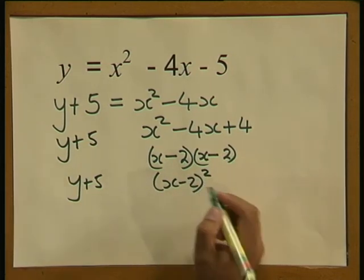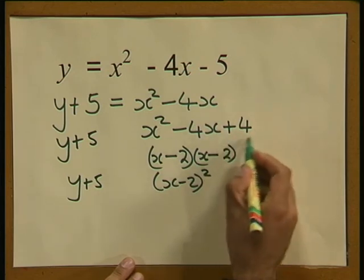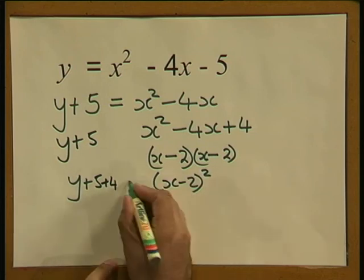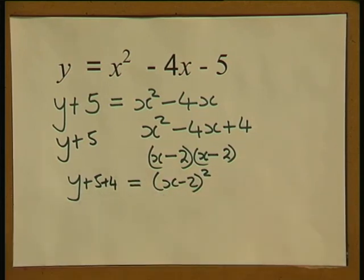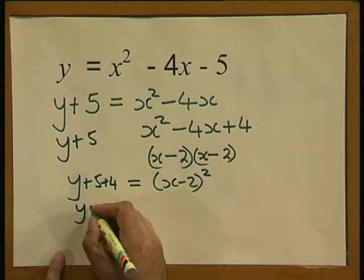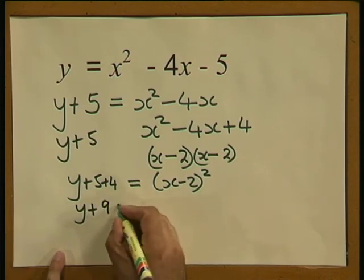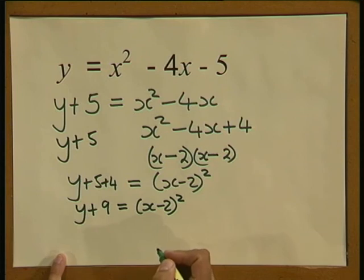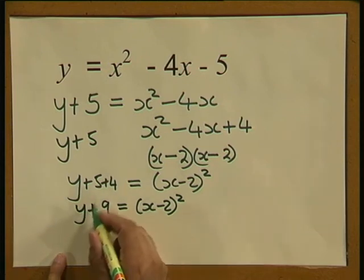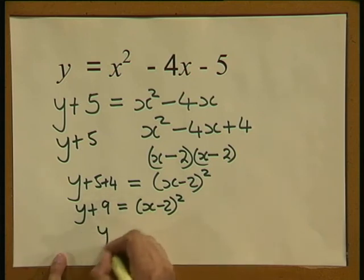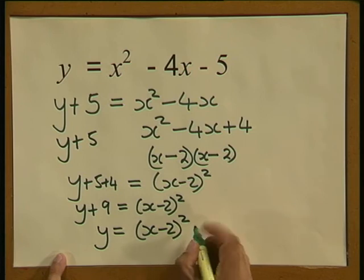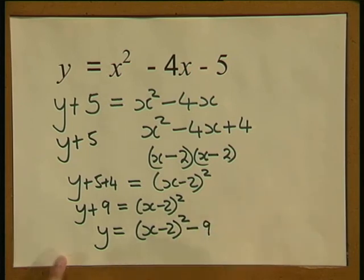Now if I have added 4 to the right-hand side, I must add 4 to the left-hand side. And then I get y plus 9 is equal to x minus 2 all squared. And when I take the 9 to the other side, in other words subtract 9 from both sides, I get y is equal to x minus 2 all squared minus 9.